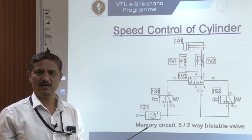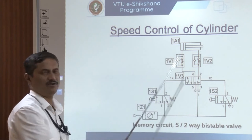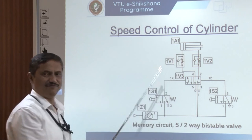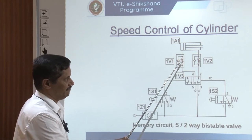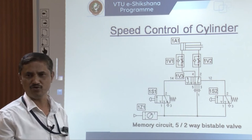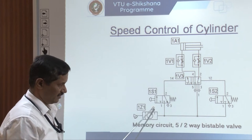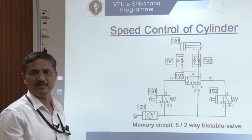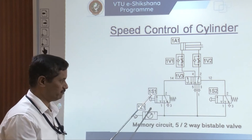Now we will come to the application of the flow control valve — how to use flow control valves in a circuit to get speed control of the cylinder. Flow control valves are preferably placed close to the actuators. We are fixing one-way flow control valves, 1V1 and 1V2, very close to the actuator ports. The circuit goes from the source to the FRL unit, then to two input elements 1S1 and 1S2, and one control element. 1S1 and 1S2 are push-button type with 3-port, 2-position, spring-return configuration.